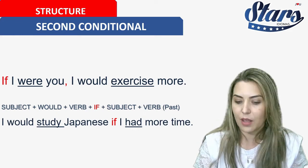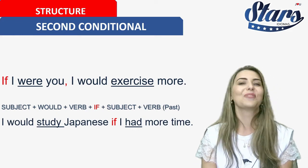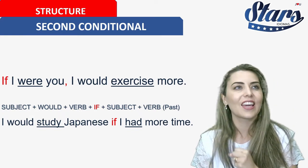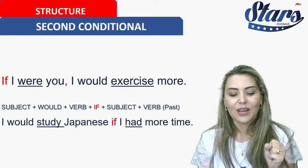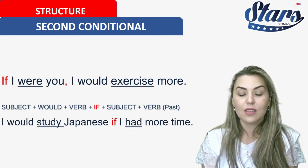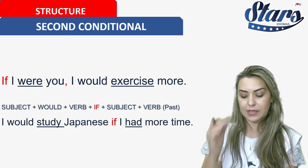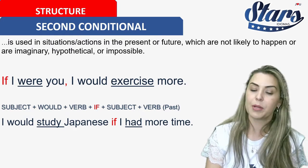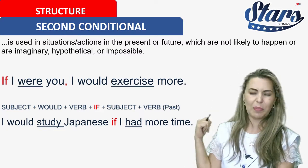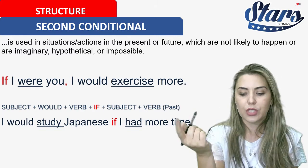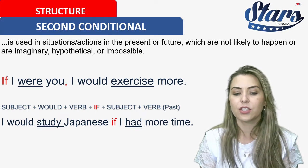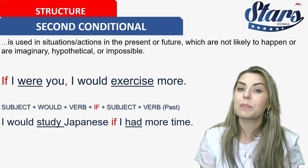I would study Japanese if I had more time. For sure I would, because I know English, and with English I can speak with the world — but with Japanese it would be nice to speak with them too. The second conditional is used for situations or actions in the present or future which are not likely to happen — imaginary, hypothetical, or impossible.